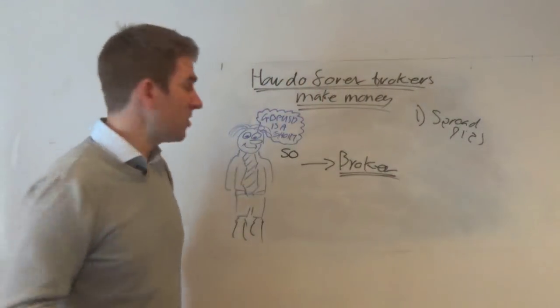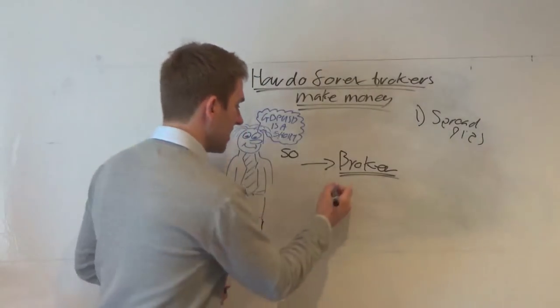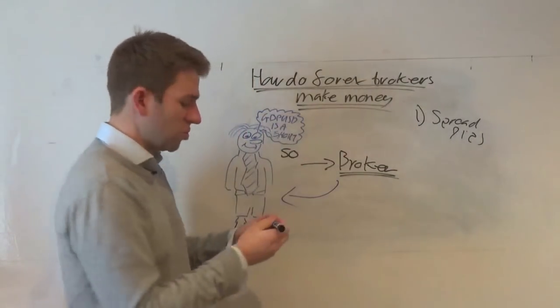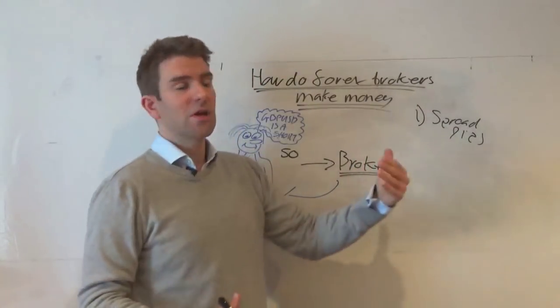And the broker says, yeah, no problem, you can go 50 short on GBPUSD. He then sends that back, allocates that to his account. This guy is now 50 units short GBPUSD, makes money if GBPUSD cable goes down, loses it if it goes up.